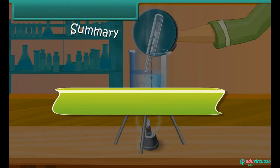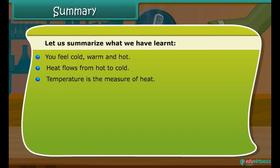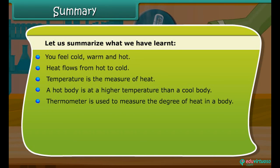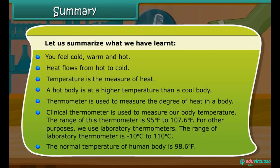Summary: You feel cold, warm, and hot. Heat flows from hot to cold. Temperature is the measure of heat. A hot body is at a higher temperature than a cool body. A thermometer is used to measure the degree of heat in a body. A clinical thermometer is used to measure body temperature — its range is 95°F to 107.6°F. For other purposes, we use laboratory thermometers — their range is minus 10°C to 110°C. The normal temperature of the human body is 98.6°F.